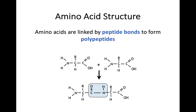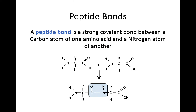We're going to go into a bit more detail about amino acids in Advanced Higher, which goes into the chemistry side but not enough to be worried about. Looking at this diagram, amino acids are linked together by peptide bonds to form polypeptides. You now need to be able to recognize that peptide bond, shown in the blue square. The peptide bond is a strong covalent bond formed between the carbon atom of one amino acid and the nitrogen atom of the other.